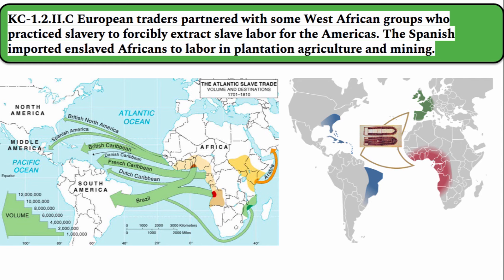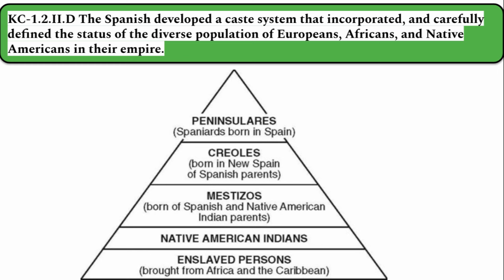Most of those kidnapped from West Africa were forcibly transported across the Atlantic to plantations in the Caribbean, Brazil, and the Southern American colonies. But you're going to see slavery develop in all parts of the Western Hemisphere, in all of the 13 colonies. The Spanish developed a caste system that incorporated and carefully defined the status of the diverse population of Europeans, Africans, and Native Americans in their empire. As a result of this process of colonization, there was a mixture of European, indigenous, and African people, and colonization led to the emergence of entirely new racial combinations. Mestizos were a mix of European and Native American blood. Mulattos were a mixture of African and European blood. In the Spanish colonies, a caste system developed in which not only money and power, but also race dictated social status.